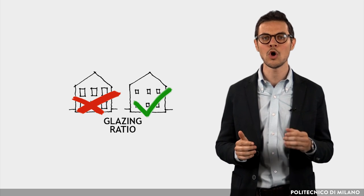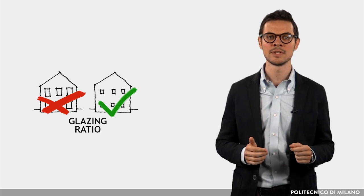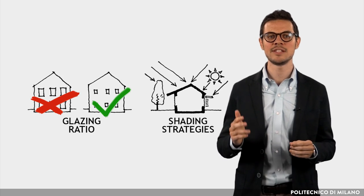In conclusion, the best choice in East African community countries would be to use clear glass with low windows to wall ratio and well-designed sun shading devices.